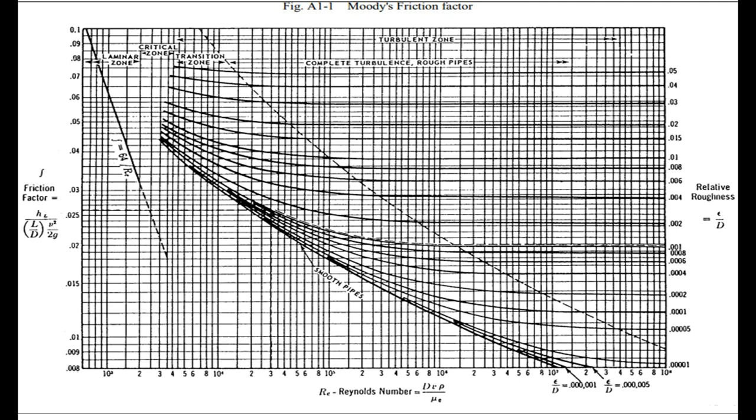This is the Moody friction chart. On the right y-axis you can see the relative roughness, and on the x-axis there is the Reynolds number. Using these two values in combination, you find the friction factor, which is used in the calculation of pressure drop for the pipeline sizing.